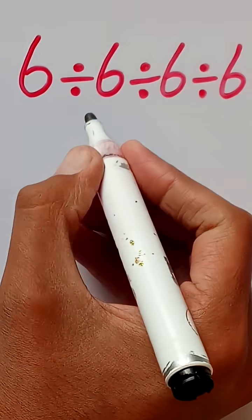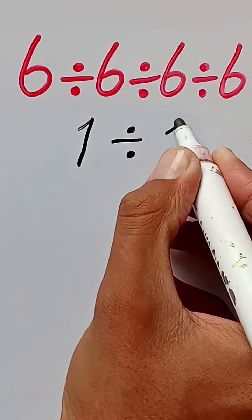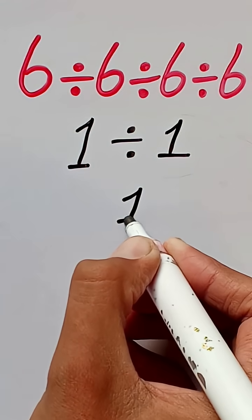6 divided by 6 equals 1, divided by 6 divided by 6 equals 1. 1 divided by 1 equals 1.